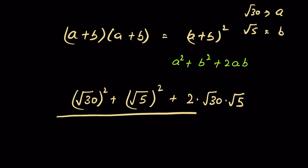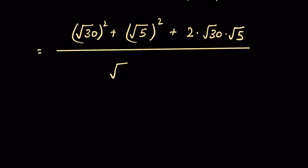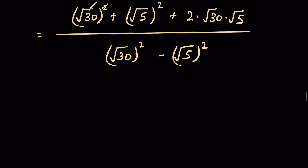In the denominator, we have (a − b)(a + b), which is a difference of squares, equal to a² − b². So we write (√30)² − (√5)². Removing the square root with the square gives us 30 − 5.